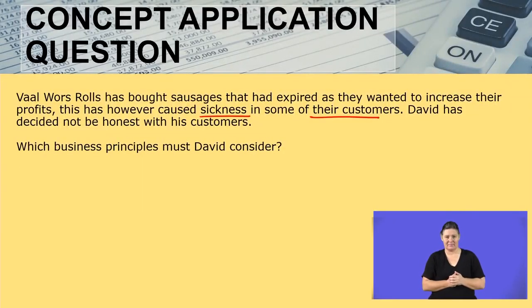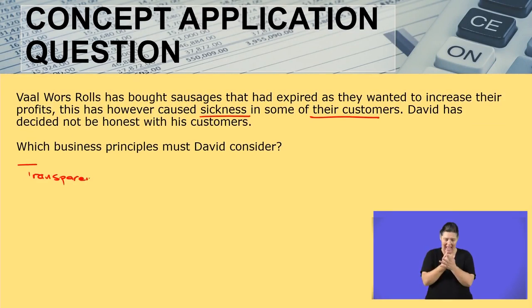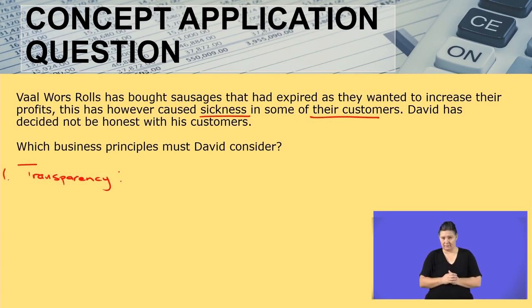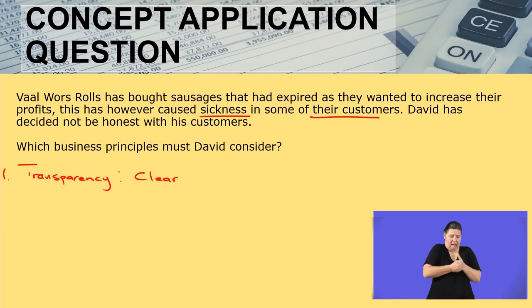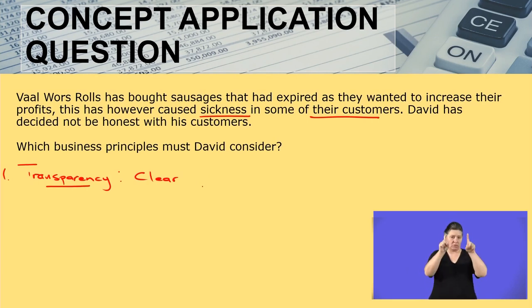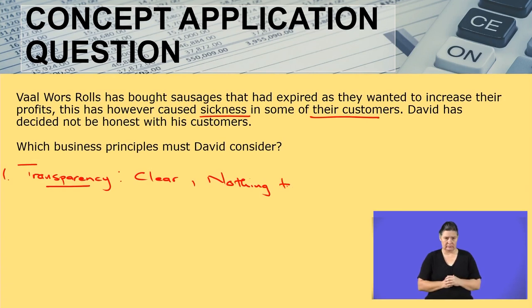The first business principle that he has to consider is transparency. Transparency becomes number one. What do we mean when we say he has to be transparent? David's behavior must be such that it is clear — clear with his business dealings, showing that he has nothing to hide.